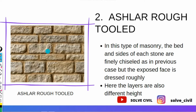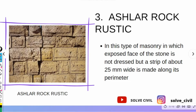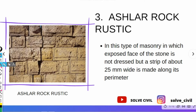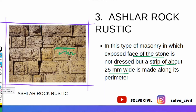The next kind of masonry is ashlar rock rustic. In this kind, the exposed face of the stone is not dressed, but a small strip of about 25 mm wide is made along its perimeter. A portion of 25 mm is being dressed, but the inside faces are not dressed — that's what makes it different from other kinds of masonry.